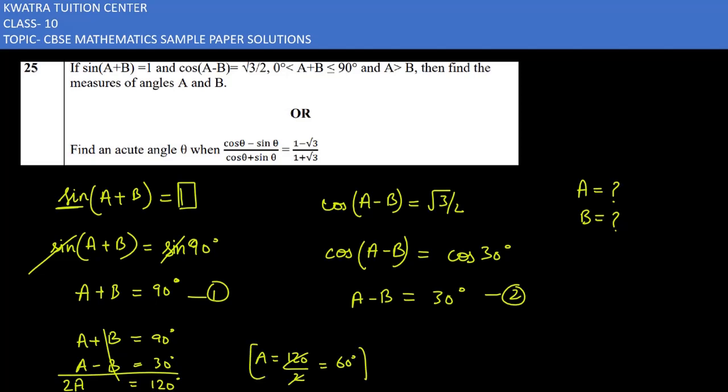So this angle a is 60. Now you will find b from it. So from equation 1 we find angle b. A plus b is equal to 90. A's value is 60. B as it is. 90 on the other side. So you have to calculate 90 minus 60. It is 30 degrees.